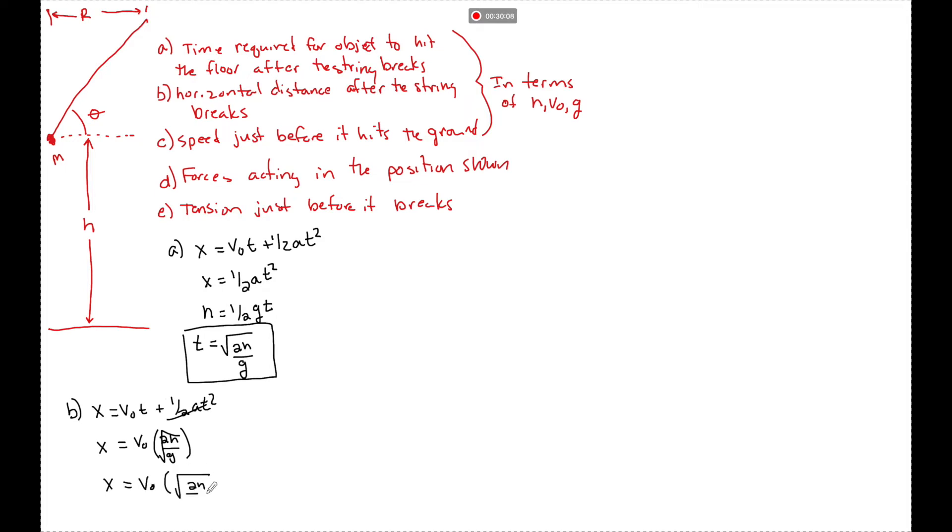And see, the speed that's going just before it hits the ground, we'll use one of our final velocities: vf squared equals v naught squared plus 2ax. Once again our a is really little g, so we can say that v equals the square root of v naught squared plus 2 little g, and the height once again it's going to fall is h.